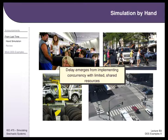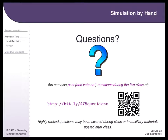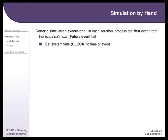Delays emerge from shared limited resources. For any discrete event system simulation, you'll have a Future Event List. In tools like Arena, you can access the Future Event List for debugging purposes. You don't usually directly interact with it unless doing a hand simulation. After lab two and this homework, you won't need to do hand simulations. The midterm may ask you to fill in a cell in a hand simulation, but in your career you won't be asked to do this by hand.